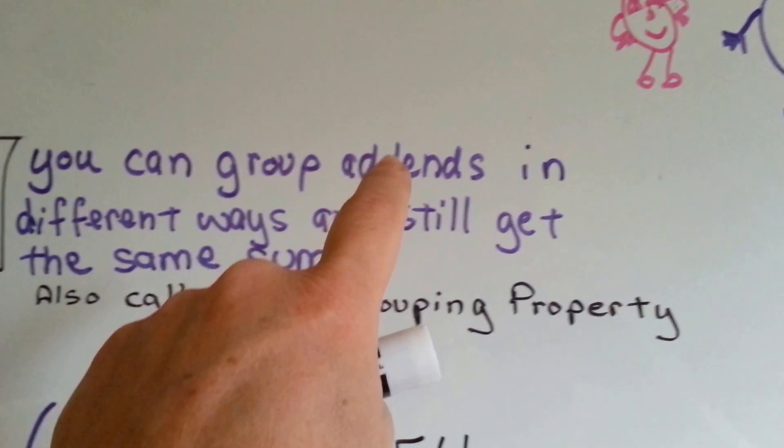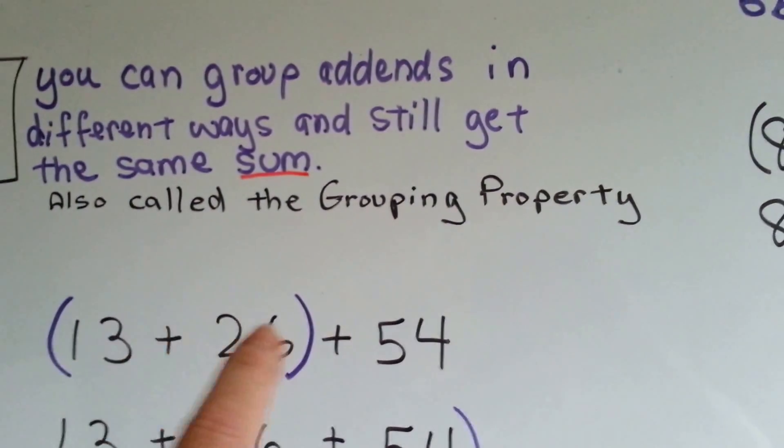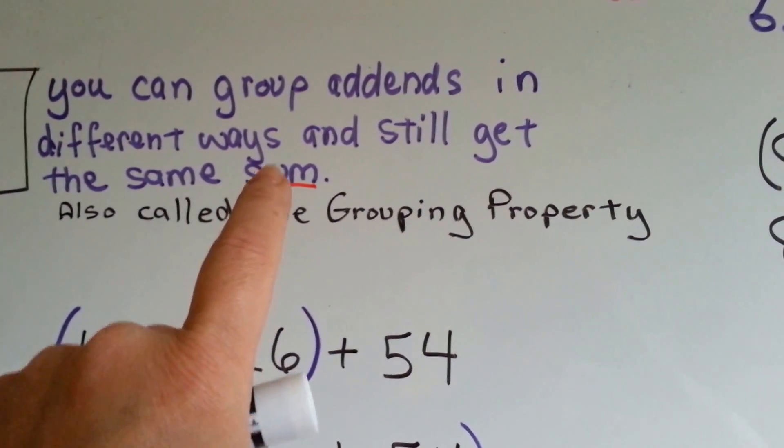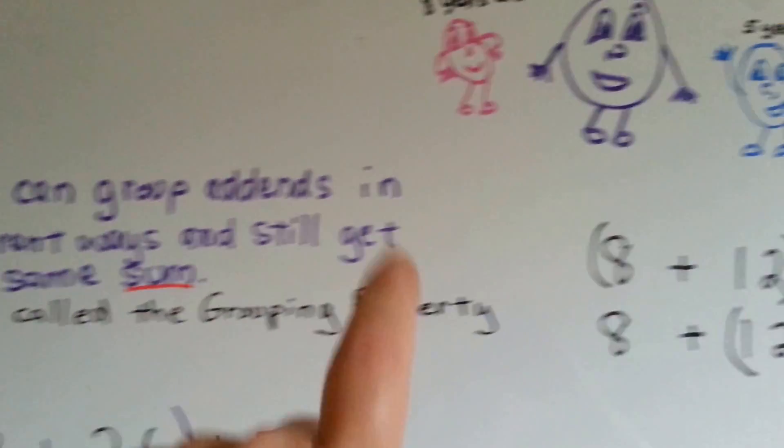What are addends? Addends are the numbers that you add together to get the sum. Those are addends.